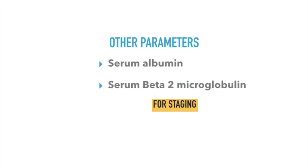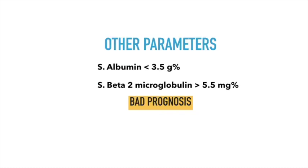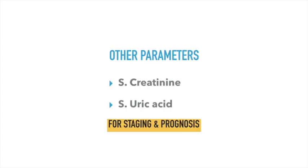The other parameters to measure are serum albumin and serum beta-2 microglobulin. Serum albumin less than 3.5 g/dL indicates damage to the kidneys with albumin being excreted out of the body, reducing its concentration. Elevated serum beta-2 microglobulin means the light chains are producing too much beta-2 microglobulin as their components — an increased concentration indicates more light chains. Other parameters to check for renal failure include serum creatinine and uric acid.